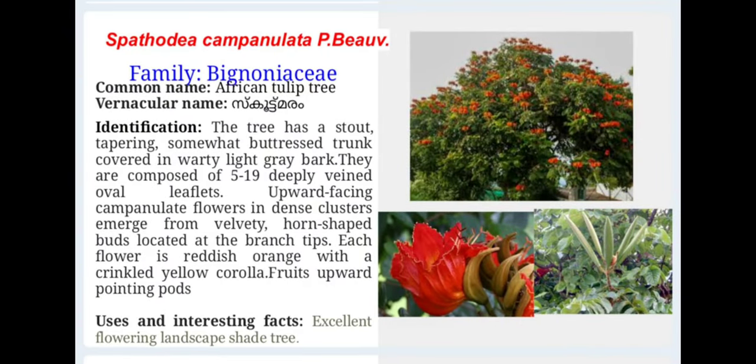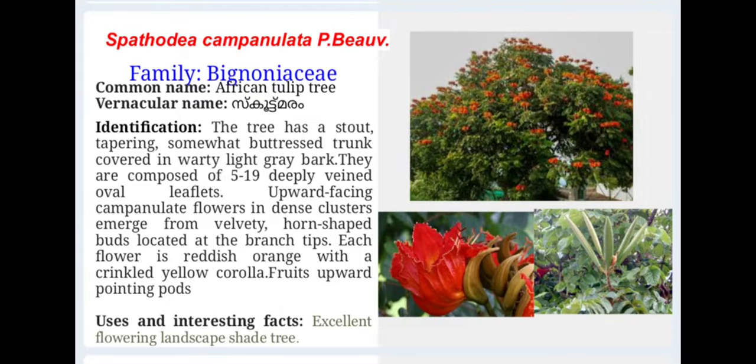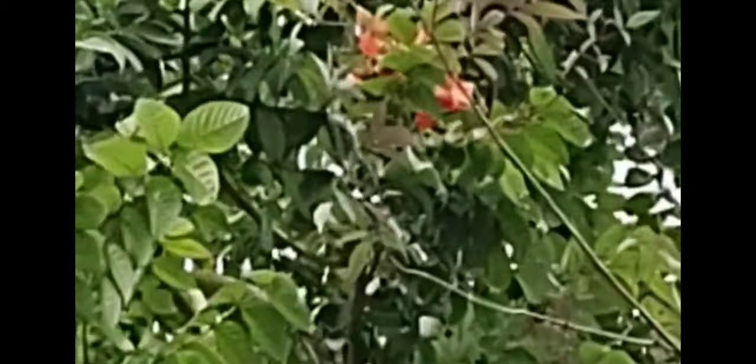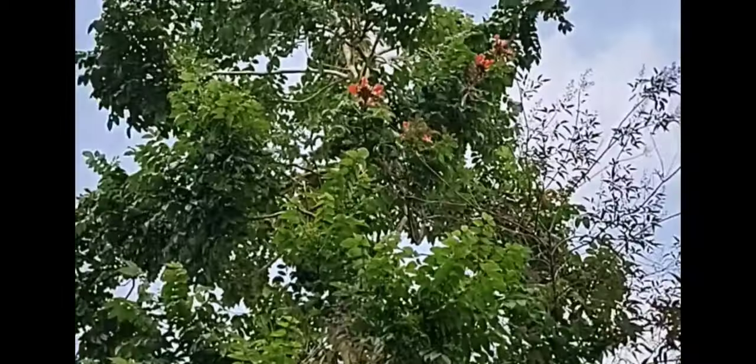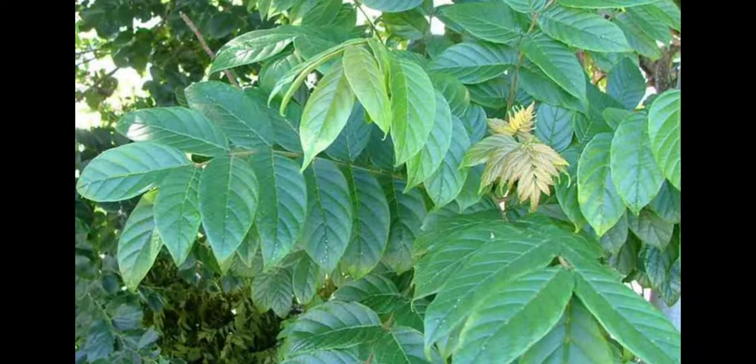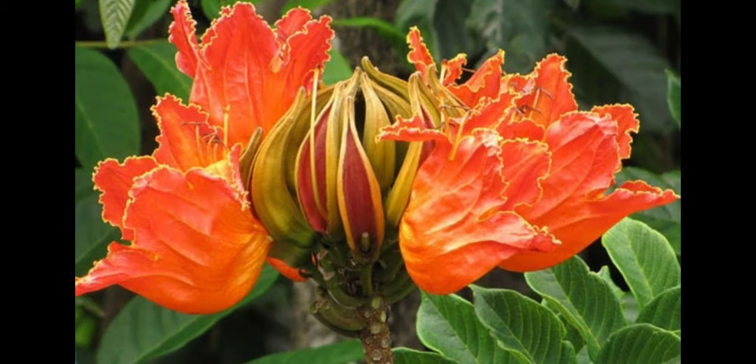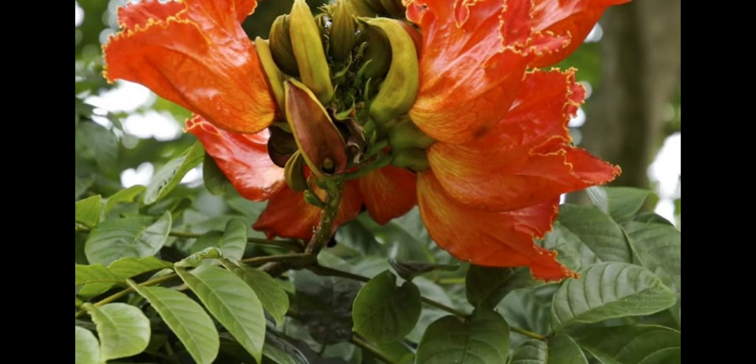Spathodea campanulata comes under the family Bignoniaceae. Commonly called African tulip tree and vernacularly known as Scutumaram. The tree has a stout tapering, somewhat buttressed trunk covered in warty light gray bark. It has upward facing campanulate flowers in dense clusters emerging from velvety horn-shaped buds at branch tips. Each flower is reddish orange with a crinkled yellow corolla. These trees are excellent flowering landscape shade trees.